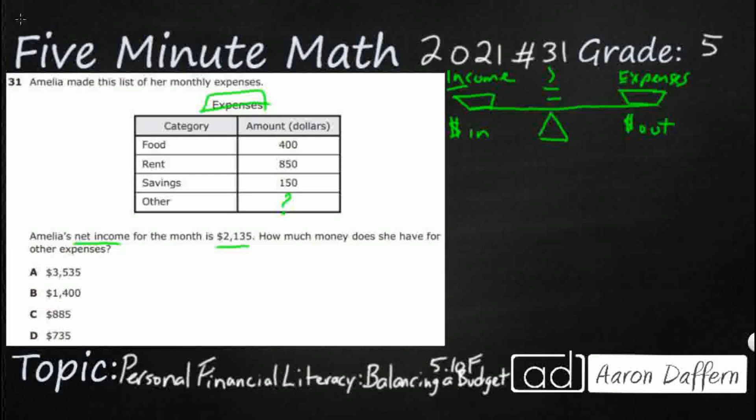So we have a net income of $2,135. So this is net income. And remember, we've got two different types of income.